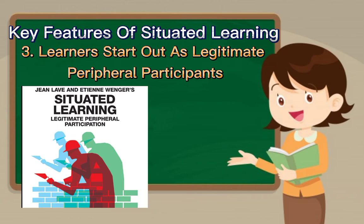Number three, learners start out as legitimate peripheral participants. This identifies learning as a contextual social phenomenon achieved through participation in a community of practice, and contrasts with most classroom learning activities that involve abstract knowledge which is out of context. Lave argues that learning is situated — that is, normally occurring embedded within activity, context, and culture. It is also usually unintentional rather than deliberate. Lave and Wenger call this process legitimate peripheral participation.